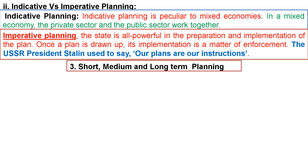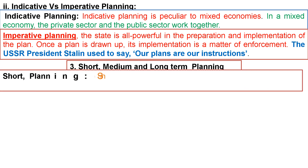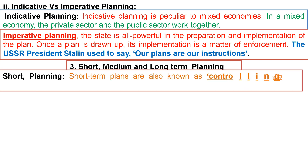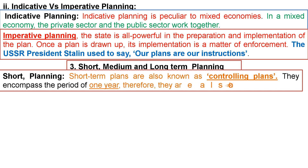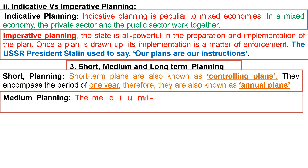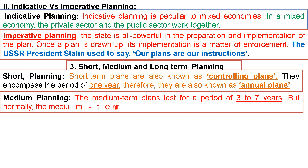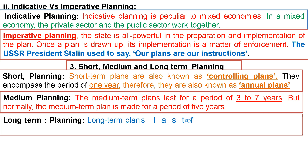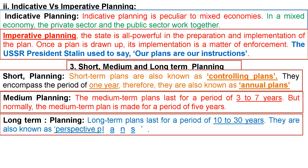Short term plan, also known as a controlling plan, encompasses a period of one year — the annual plan. Medium term plan lasts for a period of three to seven years, but normally five years. Long term plans last for a period of ten to thirty years and are also known as perspective plans.